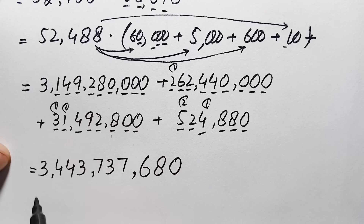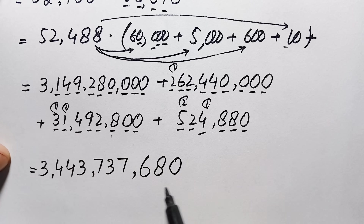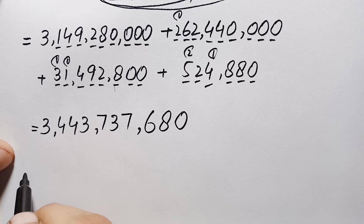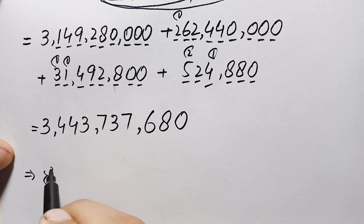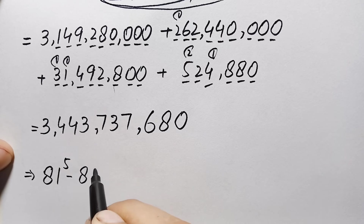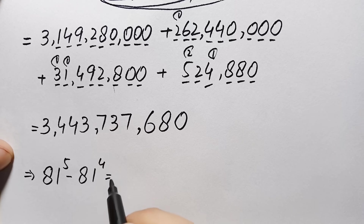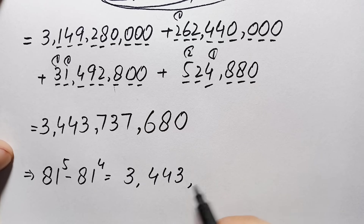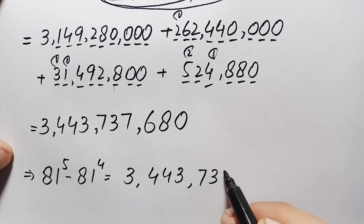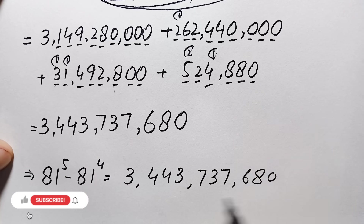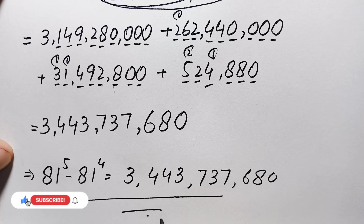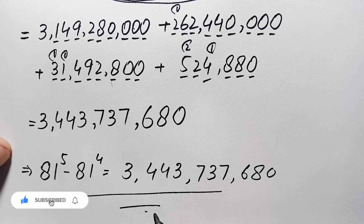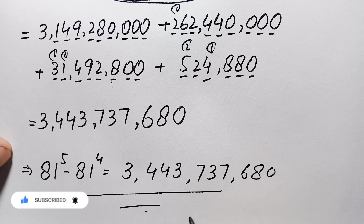So here the addition of these four numbers gives 3 billion, 443 million, 737 thousand, 680. This is our final answer. Don't forget to subscribe to my YouTube channel for more interesting step-by-step methods. Thanks for watching.